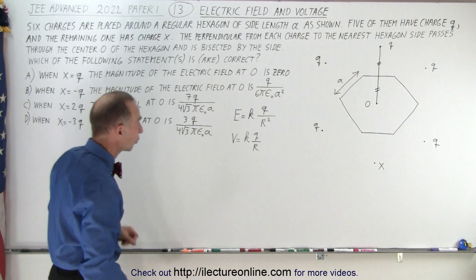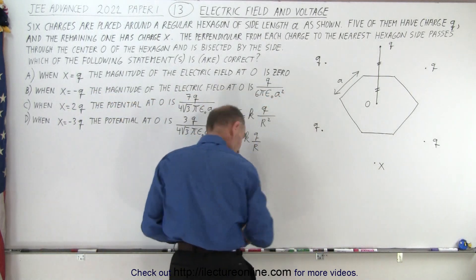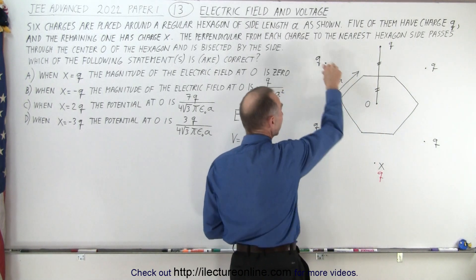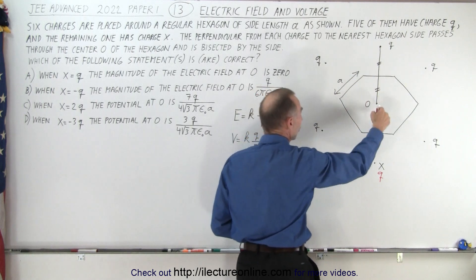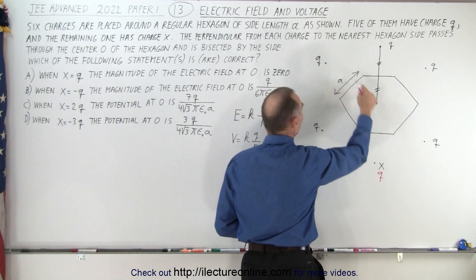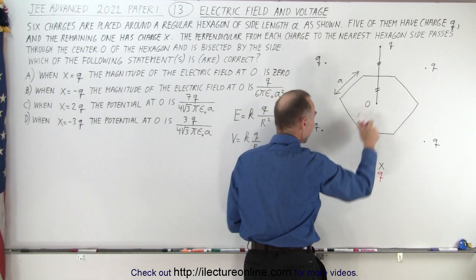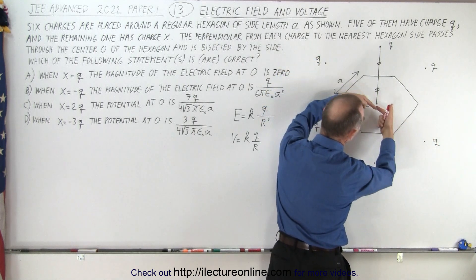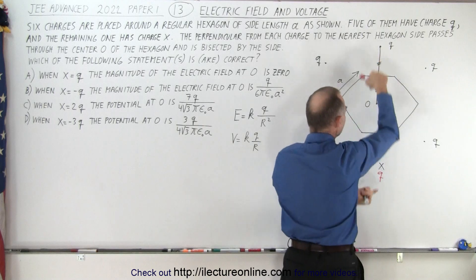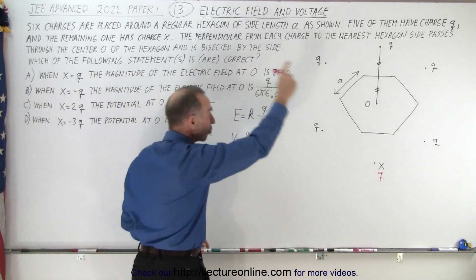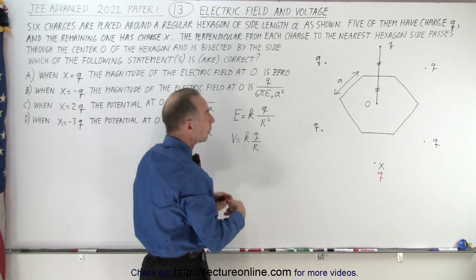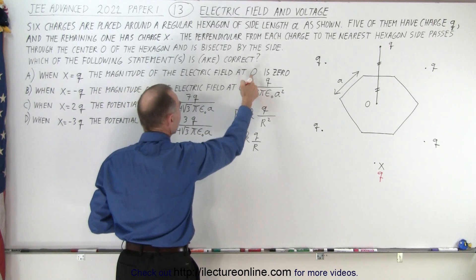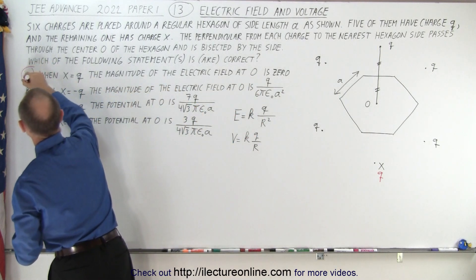If we set X equals Q, notice the perfect symmetry. The electric field will emanate away from each charge towards the center. The magnitude caused by each of the six charges will be exactly the same. Whenever we have two opposing charges like that, the magnitude is equal but the direction is opposite, so in pairs they will cancel each other out. Therefore, if all the charges have charge Q, the electric field will cancel out at O, and the first statement is indeed correct — the electric field there will be zero.